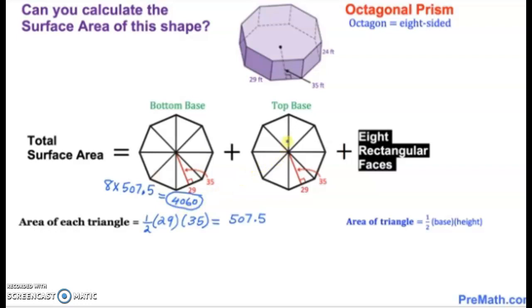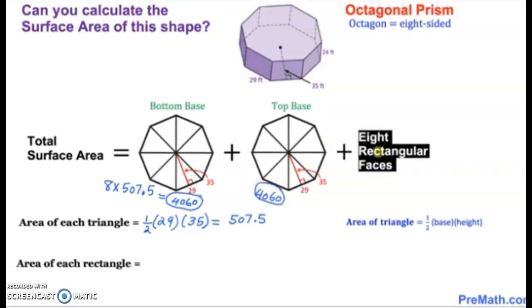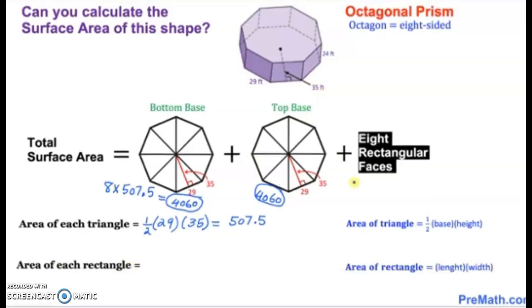If I look at the top base, I can see that it is going to be exactly the same. So I can go ahead and write 4,060 as the area for the top base. Now I can shift gears a little bit and start looking at the lateral rectangular faces. So as we know, a prism has rectangular faces that connect the base.